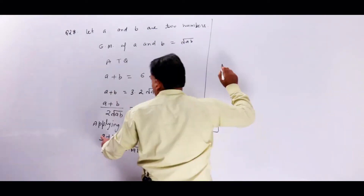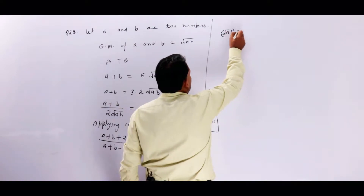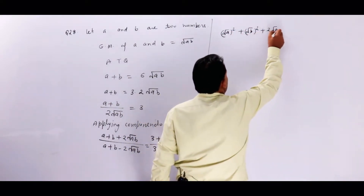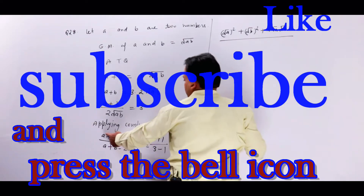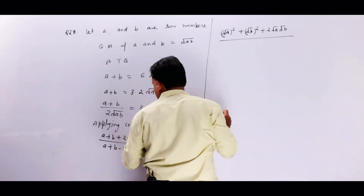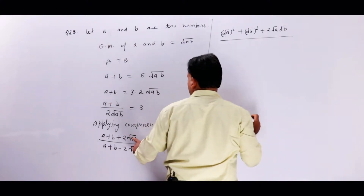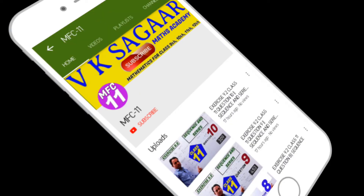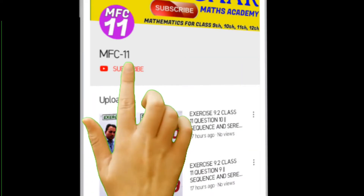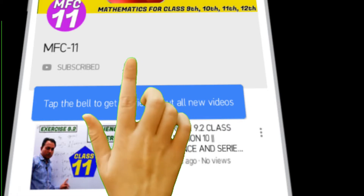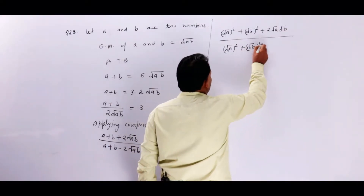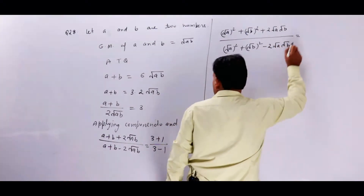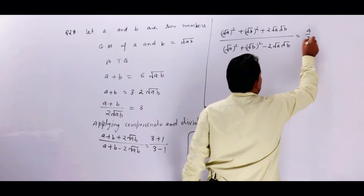आप इसे ऐसे लिख सकते हो — A को लिखेंगे (√A)², B को (√B)², और 2√A·√B। वहीं ऊपर (√A)² + (√B)² + 2√A·√B, और नीचे (√A)² + (√B)² − 2√A·√B, is equal to 4 upon 2। क्योंकि 3+1 = 4 और 3−1 = 2।